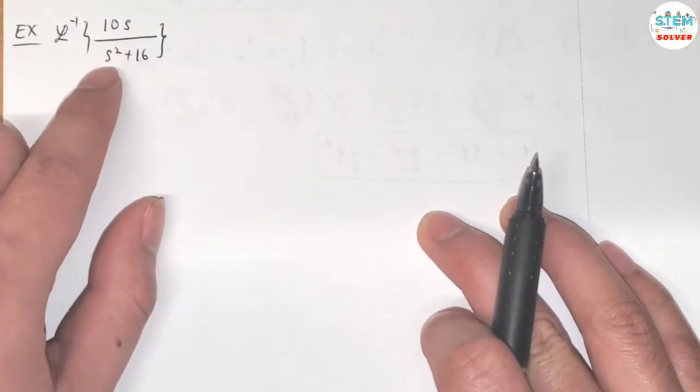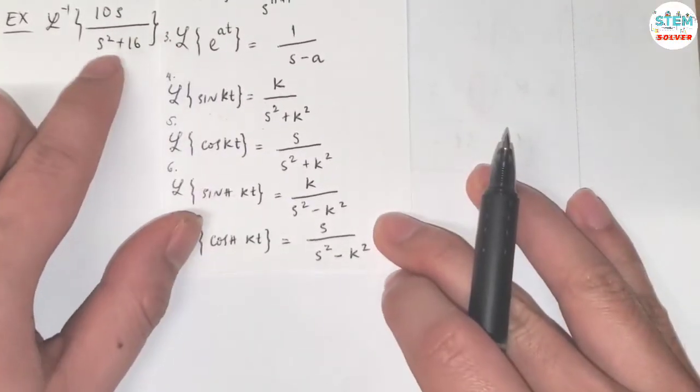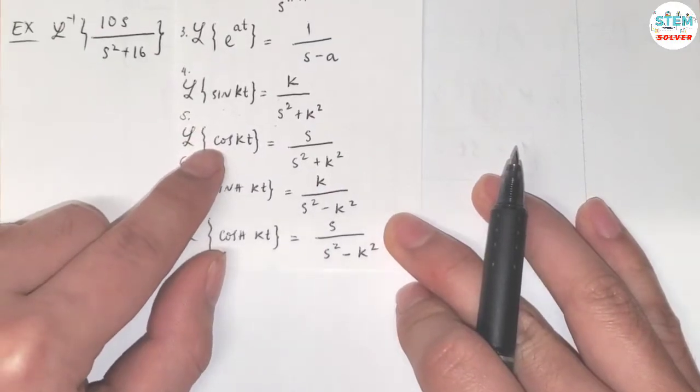Find the inverse transform of 10s over s-squared plus 16. By looking at the table, we see that we have s-squared plus something squared, which is either sine or cosine, right?